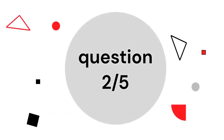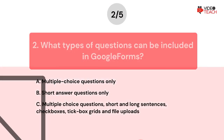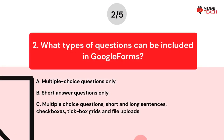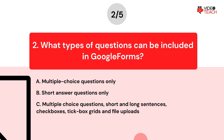Question number two. What types of questions can be included in Google Forms? Option A: Multiple choice questions only. Option B: Short answer questions only. Option C: Multiple choice questions, short and long sentences, check boxes, tick box grids, and file uploads.